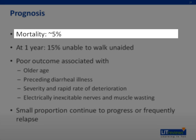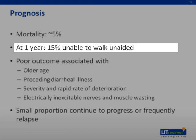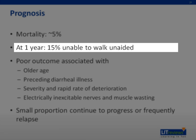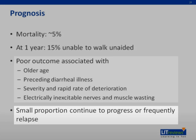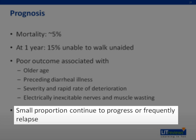Mortality in GBS is about 5%. At one year, 15% of GBS patients are unable to walk unaided. Poor outcome is associated with older age, preceding diarrheal illness, severe and rapid deterioration, electrically inexcitable nerves, and muscle wasting. A small proportion of GBS patients continue to progress or relapse and are then classified as having chronic inflammatory demyelinating polyradiculoneuropathy, or CIDP.